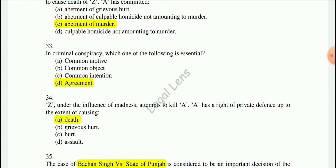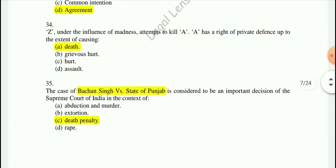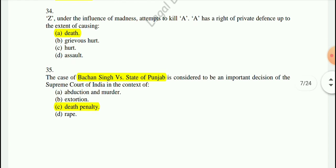Question 33: In criminal conspiracy, which one of the following is essential? The answer is: the agreement is essential. Question 34: Z, under the influence of madness, attempts to kill A. A has the right of private defense to the extent of causing death.